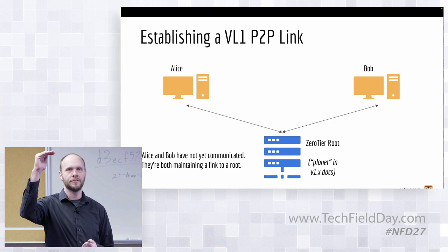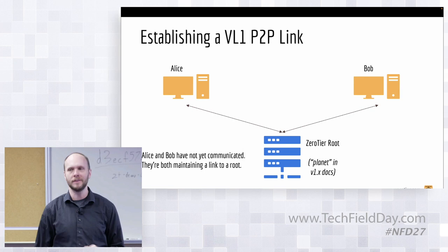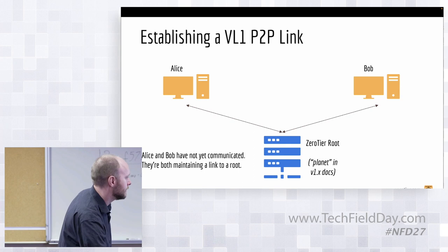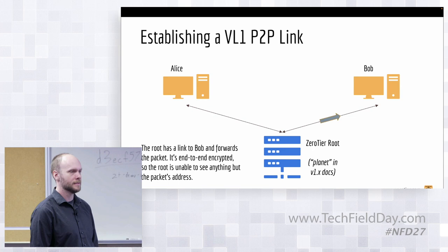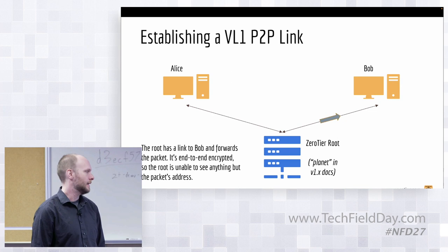The latency drops when the peer-to-peer connection gets established. Initially, you're bouncing through something, which is a lot slower. Now the next thing that happens is she sends a packet to Bob. The root forwards the packet. It's end-to-end encrypted. The root knows nothing other than that Alice and Bob want to talk to each other. The root doesn't even know what virtual network they're on. VL2 is separate. All it sees is that they are talking.